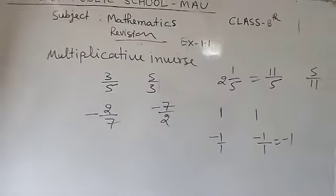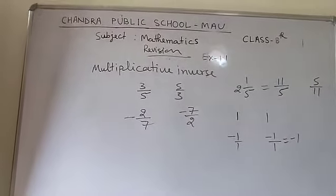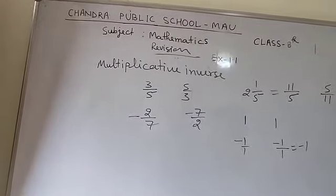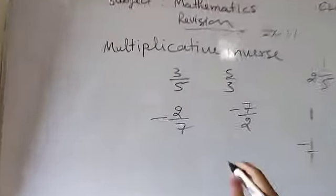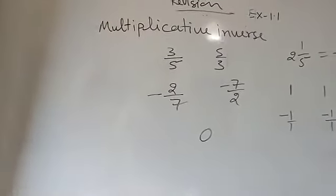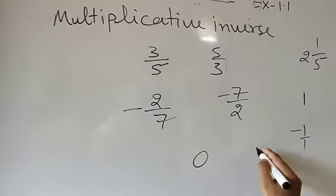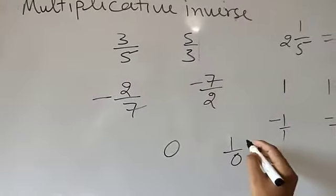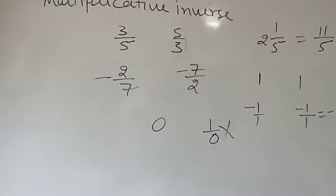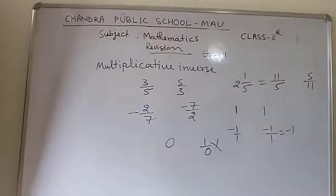If asked which number does not have its multiplicative inverse — is there any number whose multiplicative inverse will not exist? That number is 0. Zero is the number whose multiplicative inverse does not exist. If you ask what is the multiplicative inverse of 0 and write 1 upon 0, that is not a rational number, so it does not exist. Zero is the number whose multiplicative inverse does not exist.